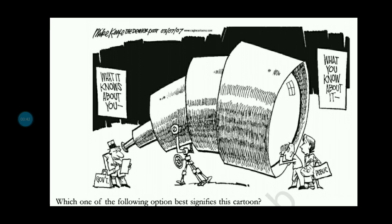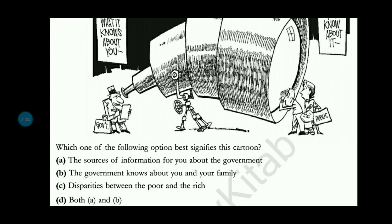The first picture shows government officials on one side and the public on the other side. One view is that they know everything about the public, but on the other side, the people know the government too. The options ask which of the following best signifies this cartoon. The information the government has shown us is very little, but the government definitely knows everything about us. The correct answer is option D — both A and B.